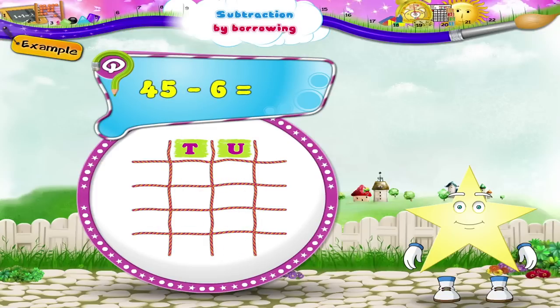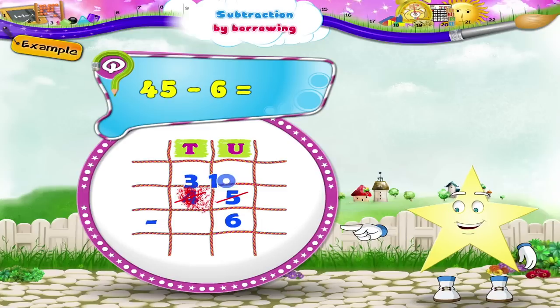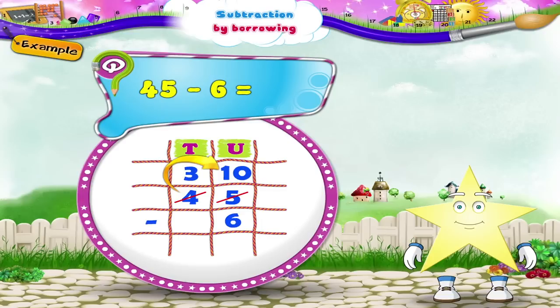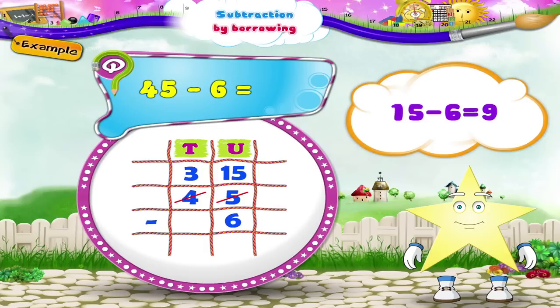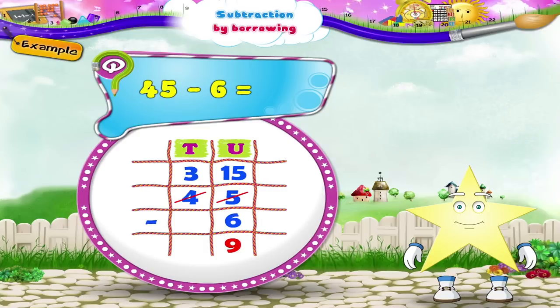Here is the next example, Sturry: subtract six from forty-five. We shall borrow one ten from four tens and add it to five units. So now we have three tens, fifteen units minus six units. Subtracting six units from fifteen units, we get nine units. We write three in the tens place of the answer as it is. So forty-five minus six equals thirty-nine.